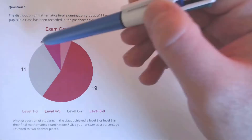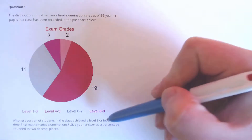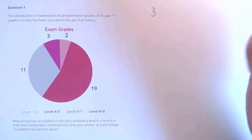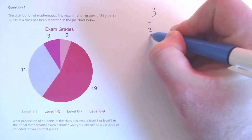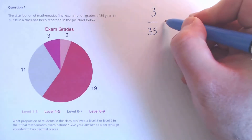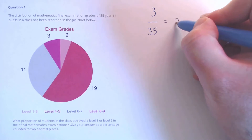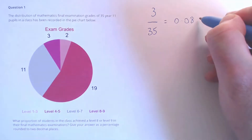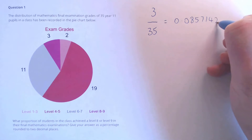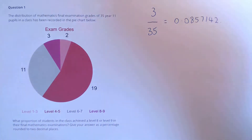From the graph, we can see that three pupils achieved a level 8 or 9 out of a total of 35, which gives us our proportion. If we calculate that, we see that that is 0.0857142, and then it continues from that.